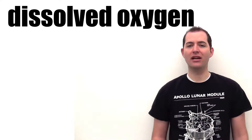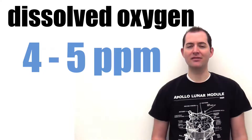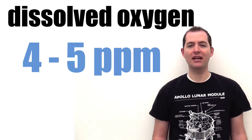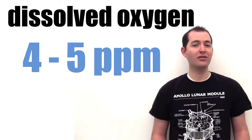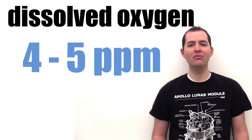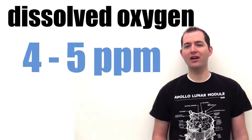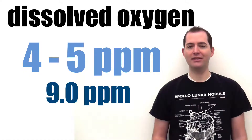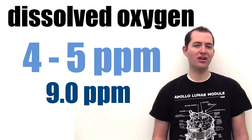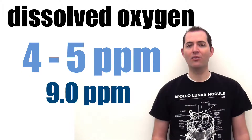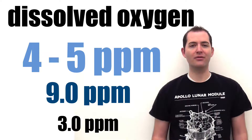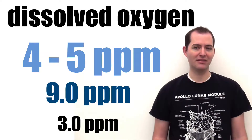Research has shown that 4 to 5 parts per million of dissolved oxygen is a minimum level to sustain a healthy fish population, while good fishing populations are most often found in waters with an average dissolved oxygen of 9.0 parts per million. And even the most hardy fish will die when the dissolved oxygen level drops below 3.0 parts per million.